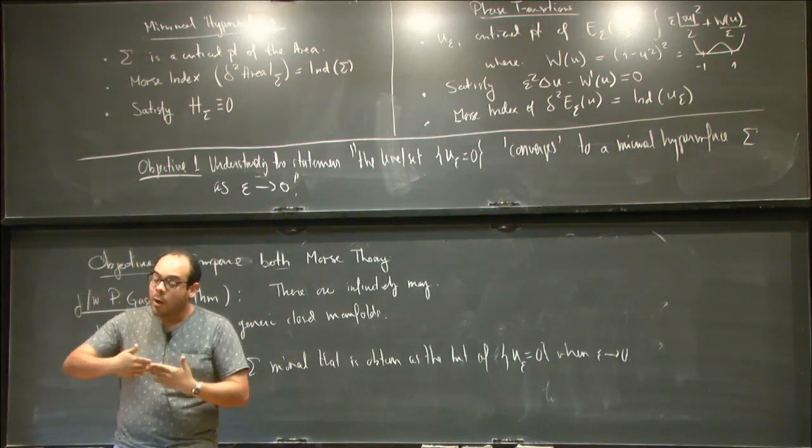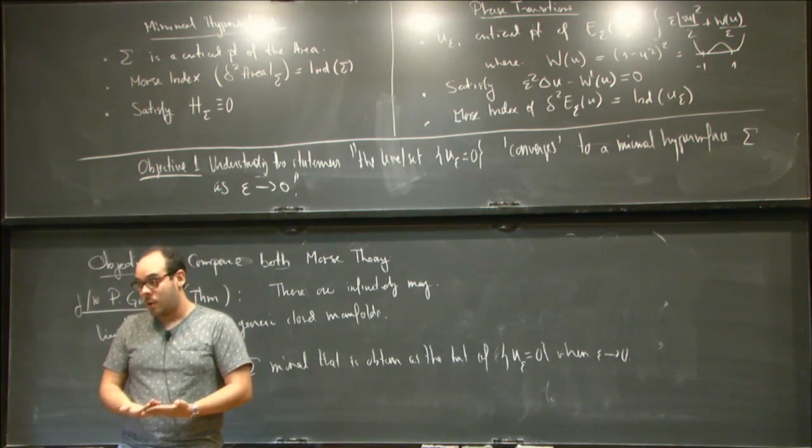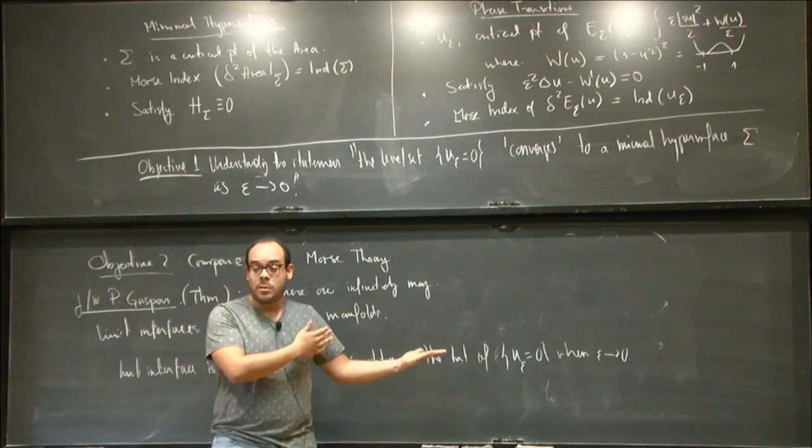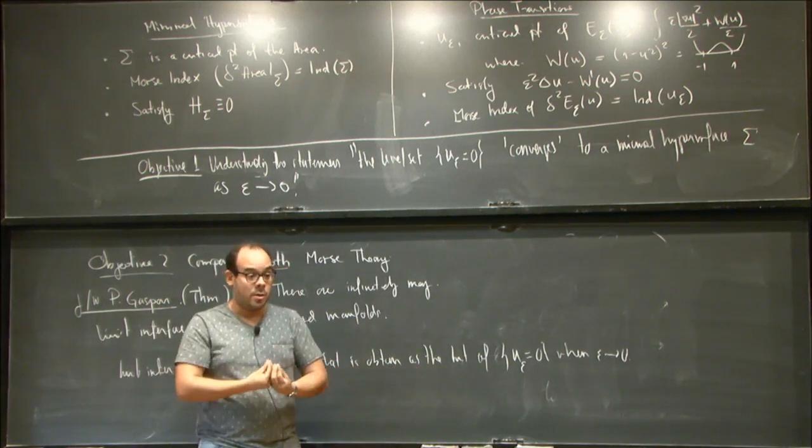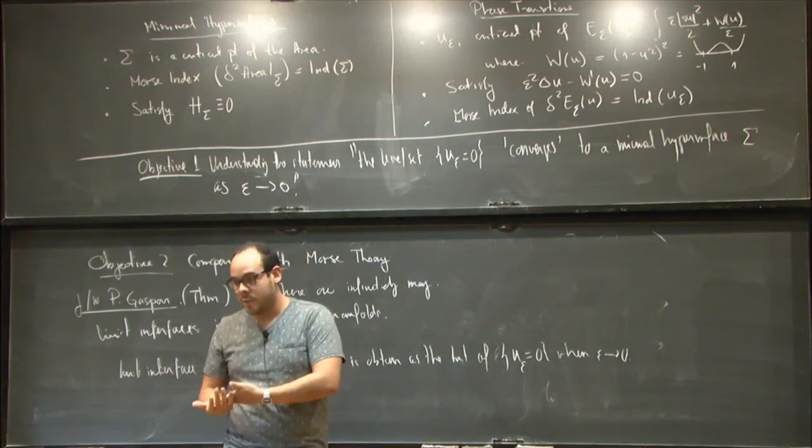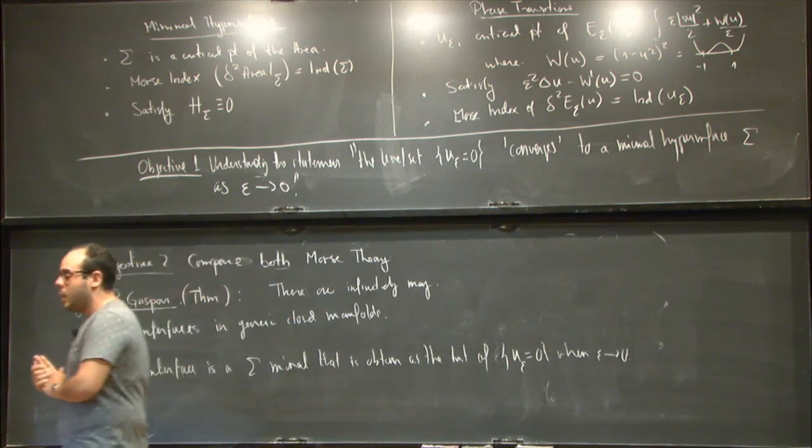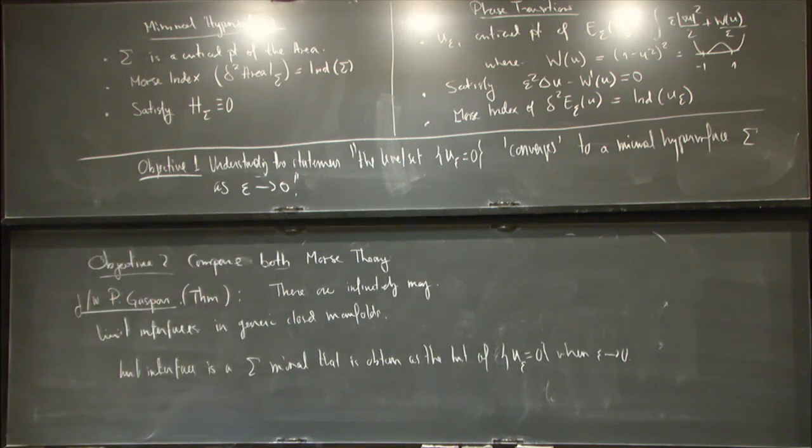And they argued that this evolved as the mean curvature flow. So it's proportional to the curvature. So this is a parabolic equation, of course. And in this context, I'm just interested in the elliptic case, which is the stationary point. Because the stationary points of the mean curvature flows are minimal surfaces. So in that sense, one would expect these to converge to minimal surfaces.